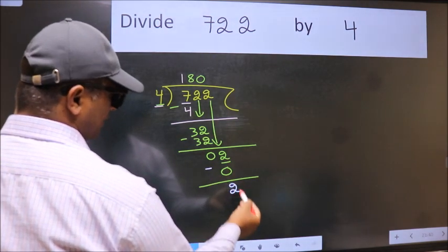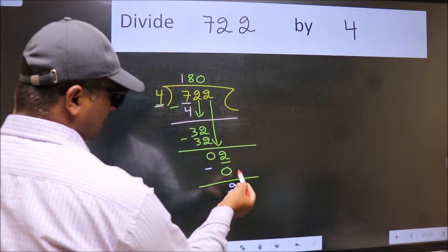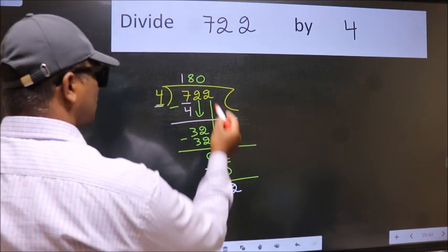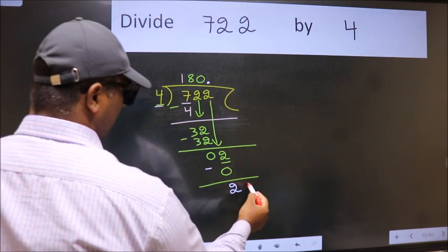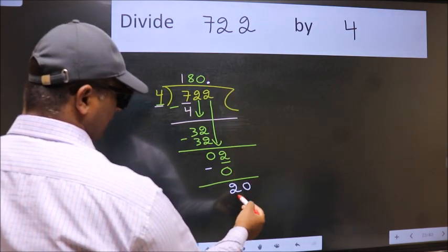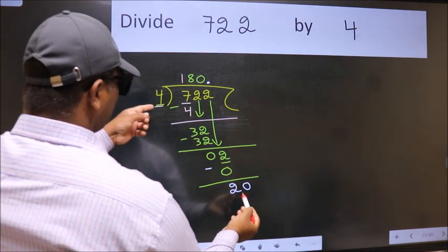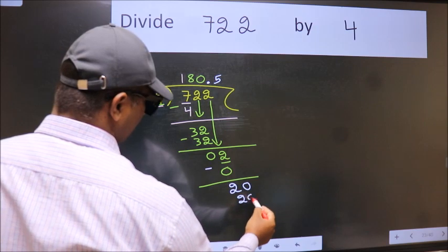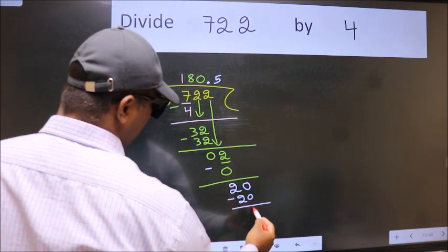Over here, we did not bring any number down. And 2 is smaller than 4. So now we can put dot and take 0. So 20. When do we get 20 in the 4 table? 4 fives 20. Now we subtract. We get 0.